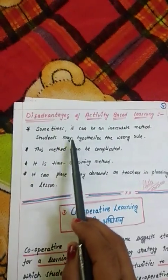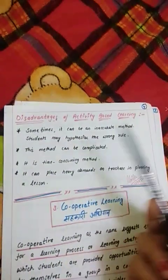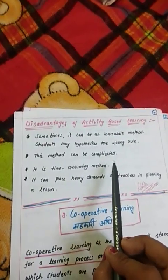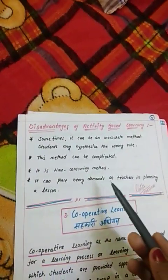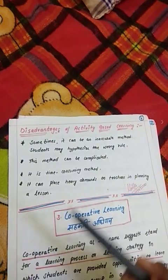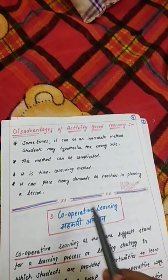Some disadvantages of Activity-Based Learning: First, it can sometimes be an inaccurate method because students may hypothesize the wrong rule, since the teacher is only a facilitator and students learn by themselves. Second, this method can be complicated because there are groups of below-average and above-average students. Third, it is a time-consuming method, and it can place heavy demands on the teacher in planning lessons.